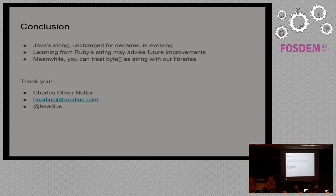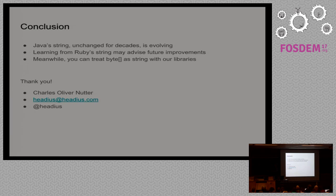Wrapping up: Java String has been really unchanged for decades as far as internal implementation, but is starting to evolve — compact ASCII strings and so on. Hopefully that process will continue and we'll get a more robust string that cuts some of that overhead. Learning from what Ruby's done and what we've ported and implemented in JRuby may inform some of those features in the future. Meanwhile, these libraries are available under the JRuby organization on GitHub — ByteList, Joni, and Jcodings — and they're all in Maven. Pull them down and they're ready to go.